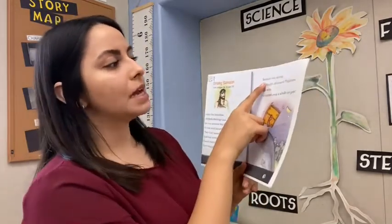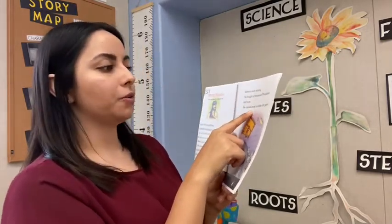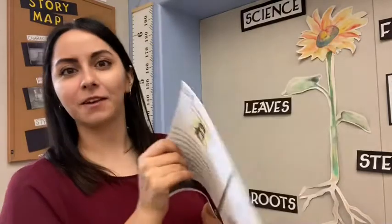That's weird. Why do you think Samson has long hair? Why do you think God was telling him that? Maybe you heard the story. Samson was strong. He fought a thousand Philistines and won. He carried away a whole city gate. And then you see him holding a city gate. He is a very strong man. I wonder if his hair has something to do with that.